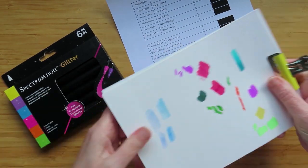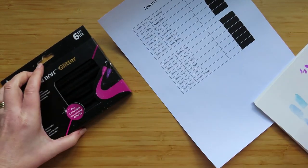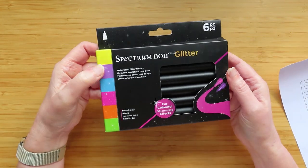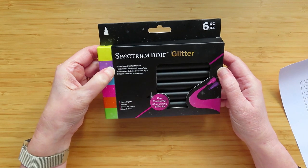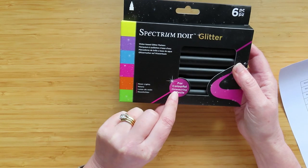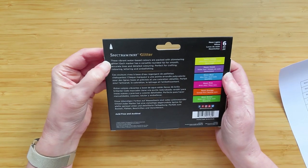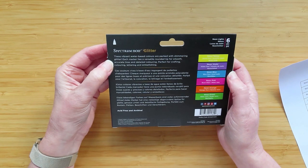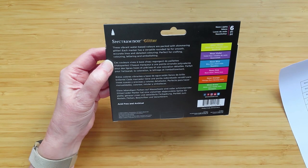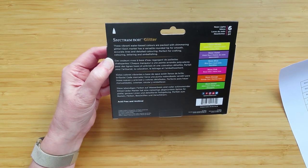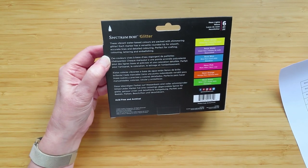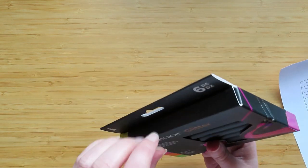Let me get some paper to prime them. As I said in the haul video, there's nothing on here about instructions. It just says water-based glitter pens. They're called Neon Lights for colorful shimmering effects. On the back it says these vibrant water-based colors are packed with shimmering glitter. Each marker has a versatile rounded tip for perfect smooth accurate lines and detailed coloring. Perfect for crafting, coloring, lettering, and embellishing.